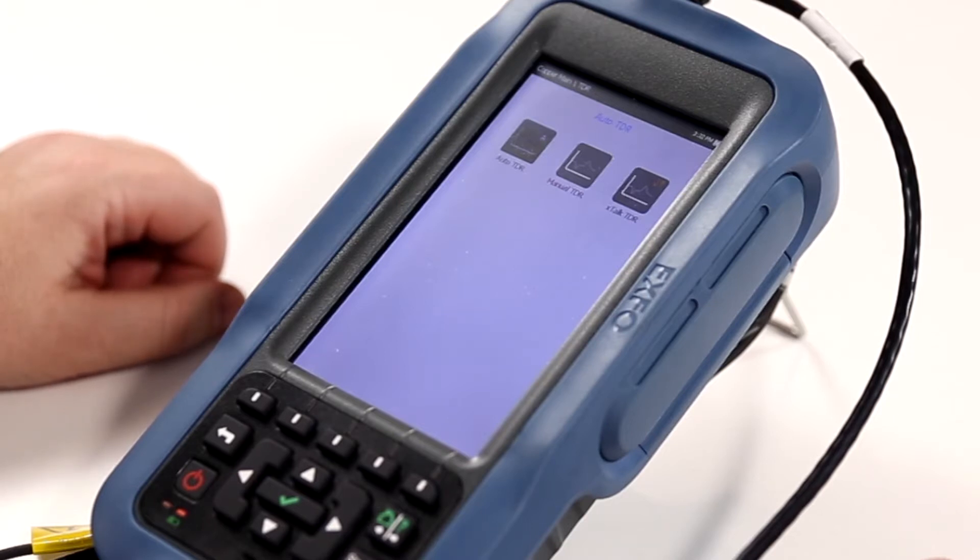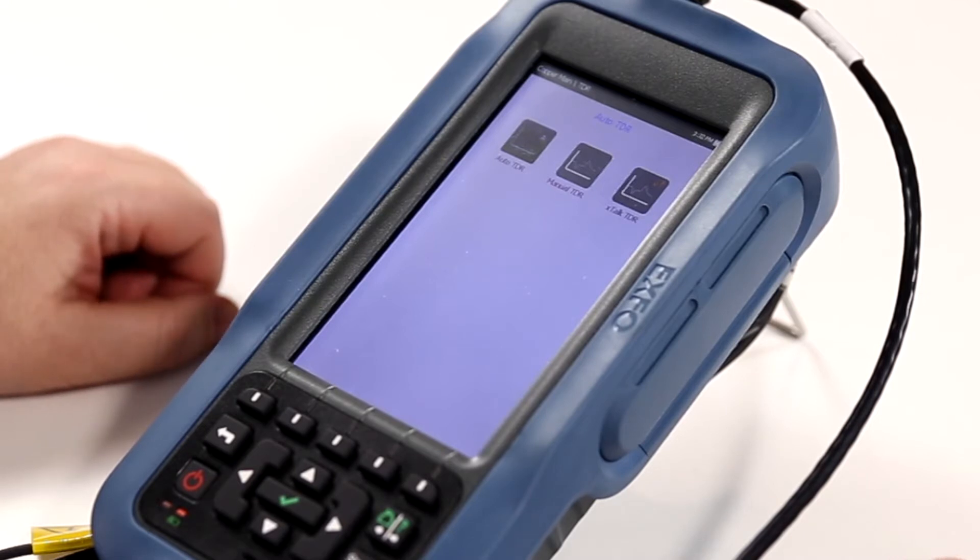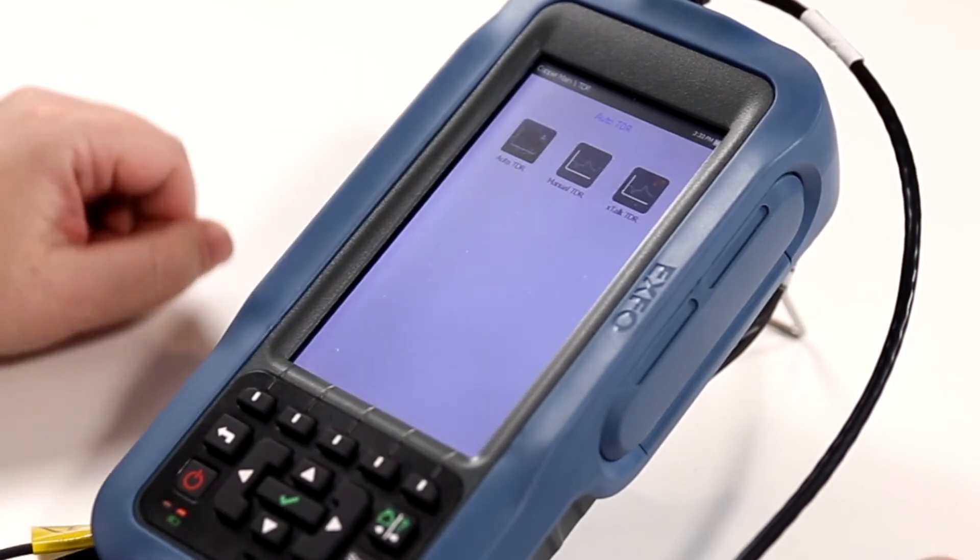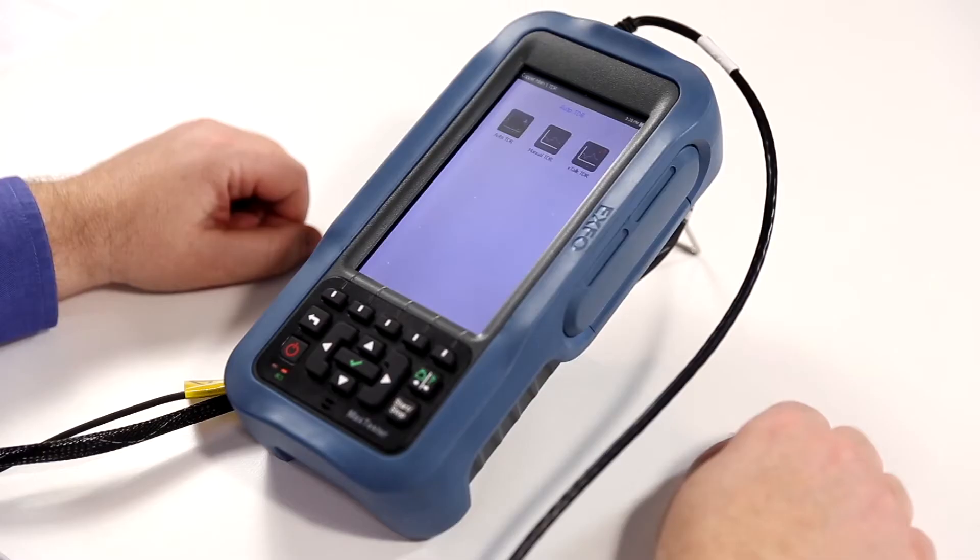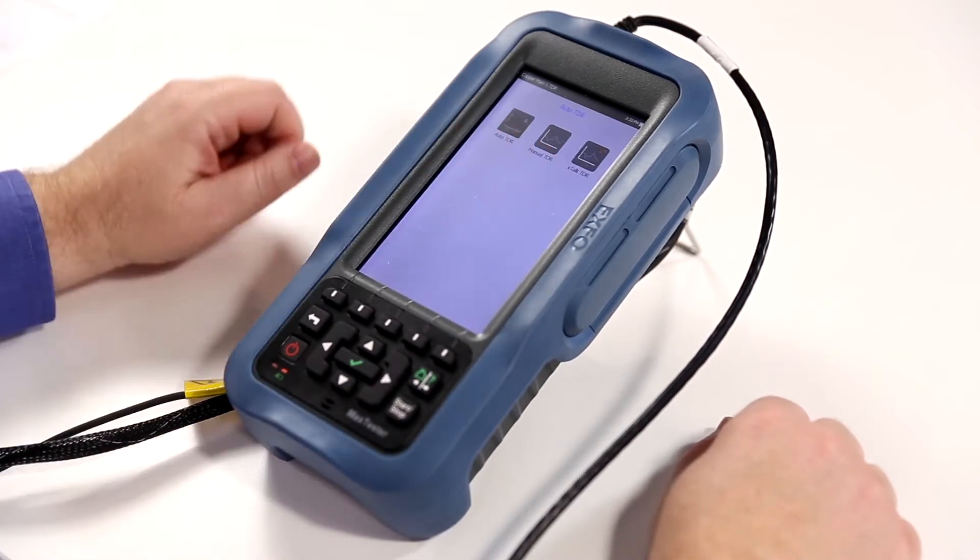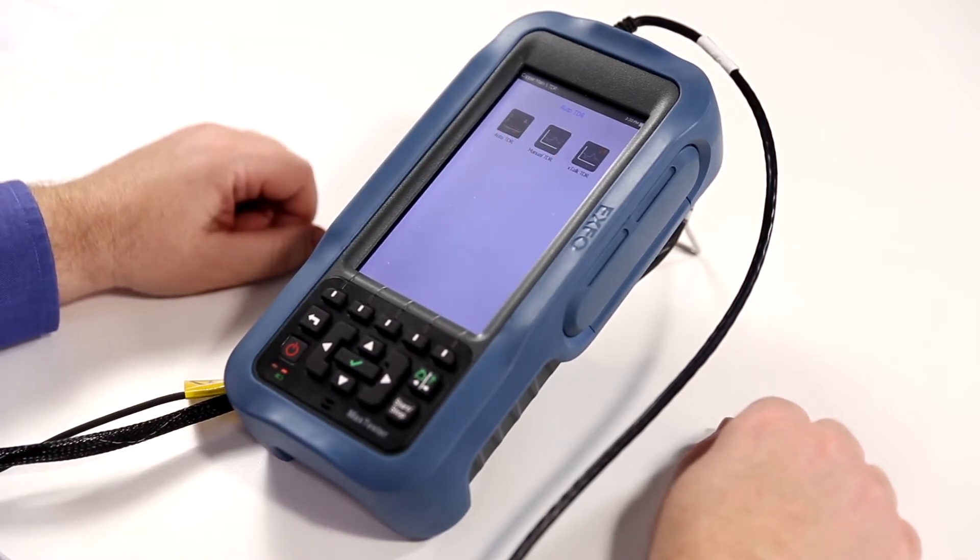The Auto TDR is meant to automatically locate a fault and center it on the screen so users will be able to easily see where a fault exists or where the end of the circuit exists. The manual TDR will allow more control to be given to a technician in order to manipulate the trace and the outgoing pulse. And finally, the crosstalk TDR is an excellent test for locating split pairs by transmitting on one pair and receiving on a second pair.